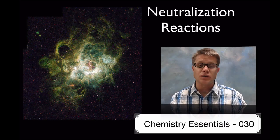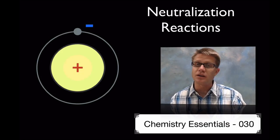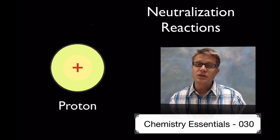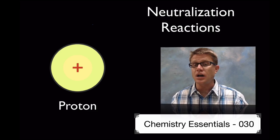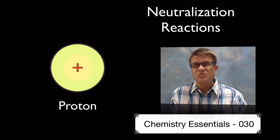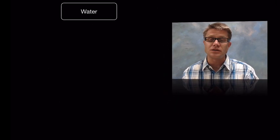90% of atoms are actually hydrogen. Hydrogen is one proton and one electron. The proton has a positive charge and the electron has a negative charge. So if we take away that electron, what are we left with? A proton. You'll hear these used interchangeably — a hydrogen ion, which has a positive charge, or a proton. Those mean essentially the same thing, and they're both incredibly important when talking about neutralization reactions.